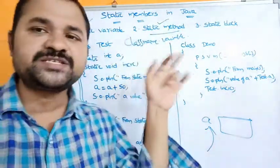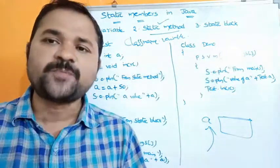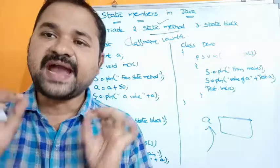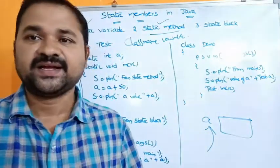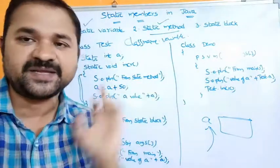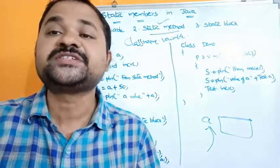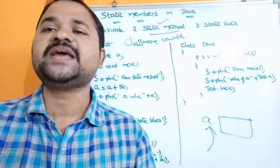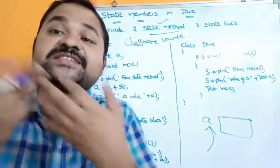Why do we use a static method? Mainly we use a static method in order to access static variables. Using a static method it is not possible to access non-static members. The advantage of a static method is that it allows us to access static variables as well as other static methods. If we try to access non-static members from a static method, the compiler will generate an error message.